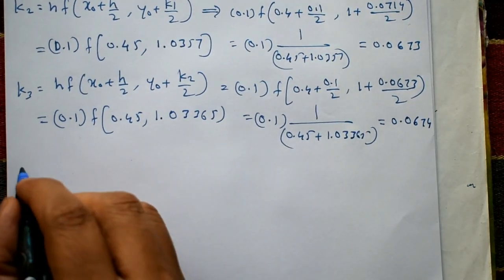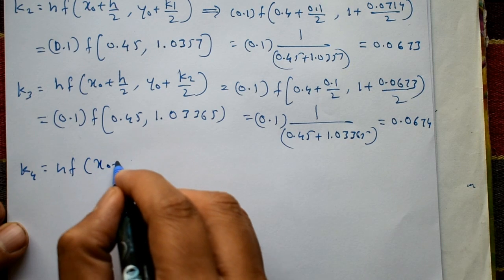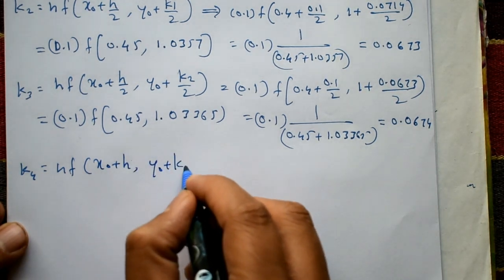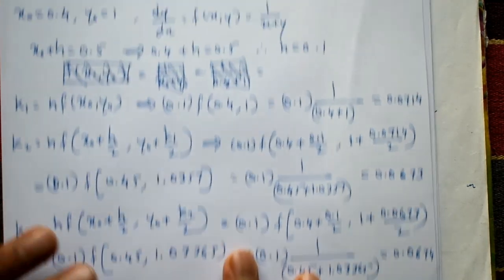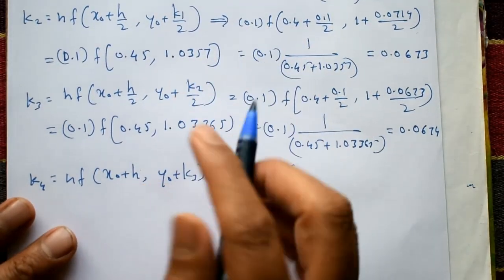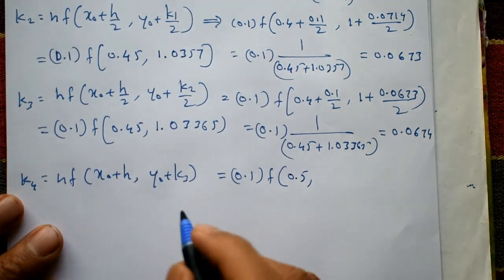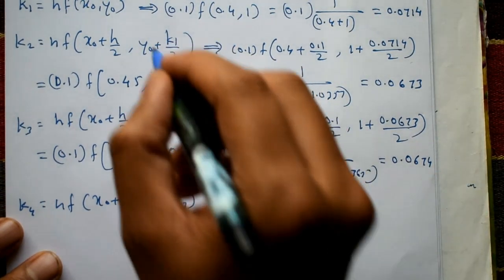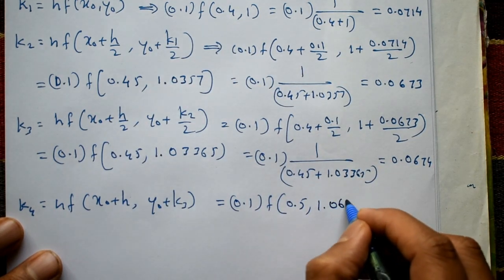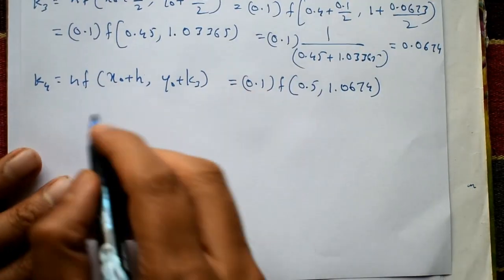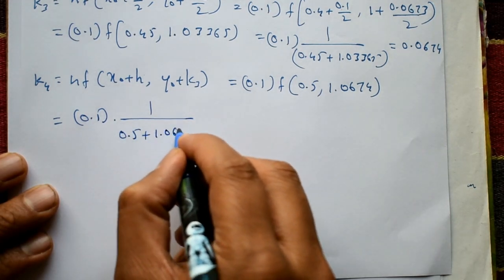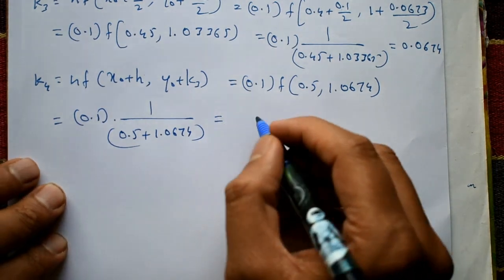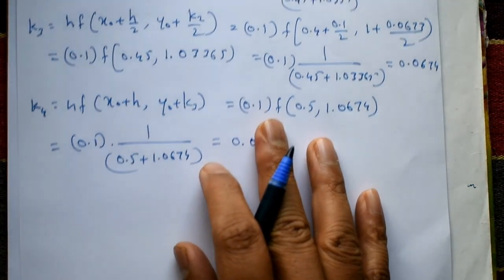For k4, k4 = h · f(x₀ + h, y₀ + k3) = 0.1 · f(0.4 + 0.1, 1 + 0.0674) = 0.1 · f(0.5, 1.0674). Using f(x,y) = 1/(x+y), we get 0.1 · 1/(0.5 + 1.0674), giving k4 = 0.0638.